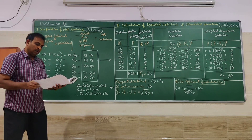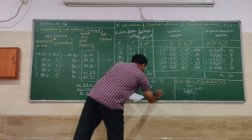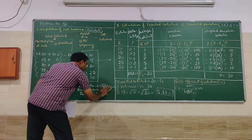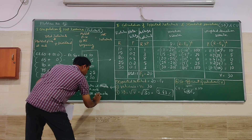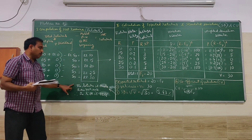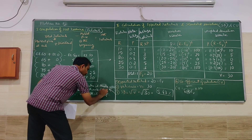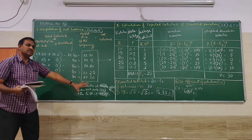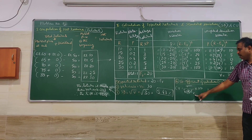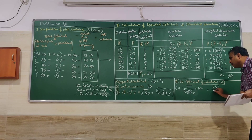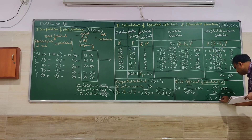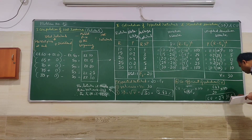We can also analyze based on SD. Standard deviation is square root of 30, which is 5.47. Since return (20) is more than SD (5.47), the risk is less. Now for the coefficient of variation (CV): CV equals standard deviation divided by expected return, multiplied by 100. So CV = 5.47 divided by 20, multiplied by 100, which equals 27.35%.